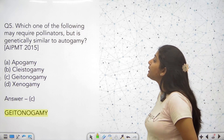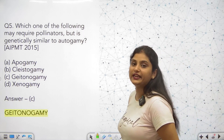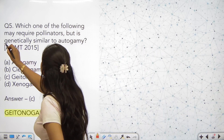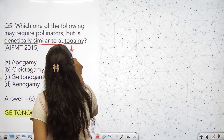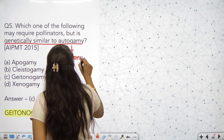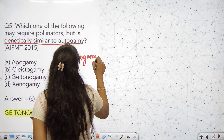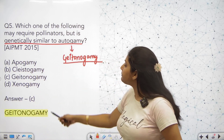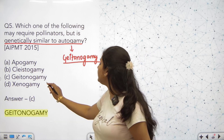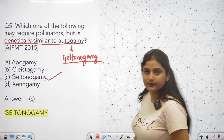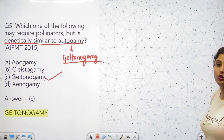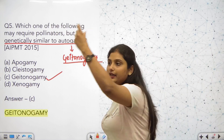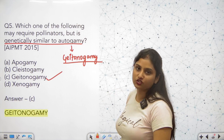Question number 5: which one of the following may require pollinators but is genetically similar to autogamy? Genetically similar to autogamy means the pollen comes from the same individual. Which one may require pollinators? Geitonogamy. Because geitonogamy means that in one plant there are two flowers, so we need pollinators to transfer pollen between those flowers, yet genetically it is similar to autogamy.